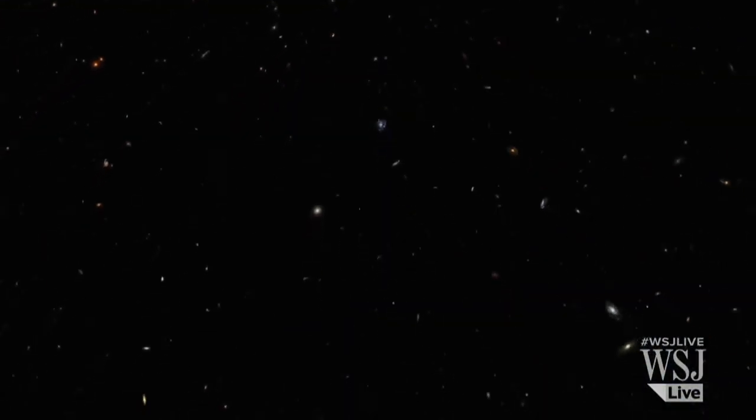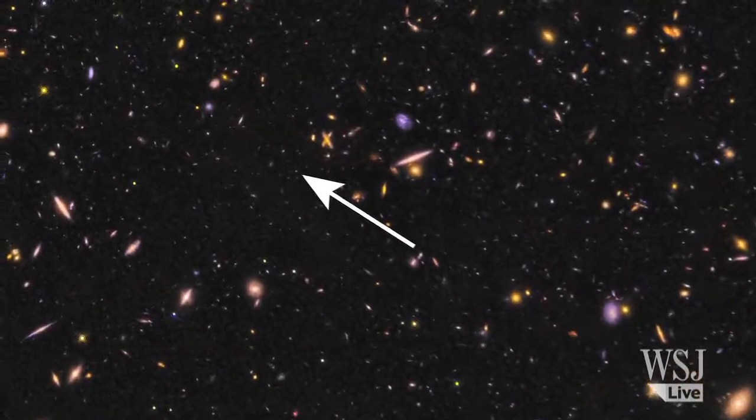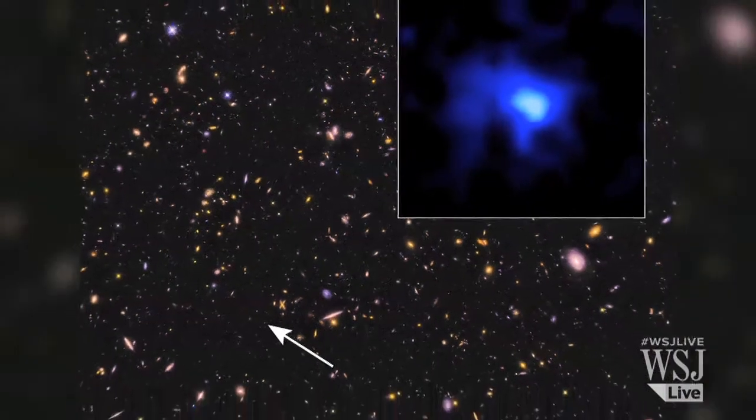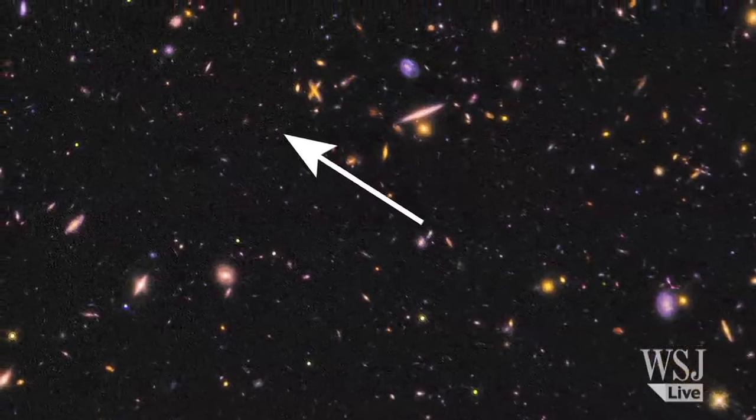Because looking far into the universe is like looking back in time, the scientists determined that the light of this distant galaxy has taken more than 13 billion years to reach telescopes on Earth. It is one of the earliest galaxies to form in the cosmos about 670 million years after the Big Bang.